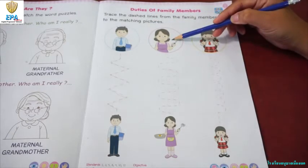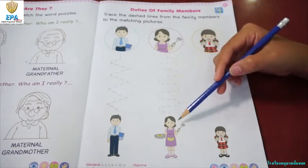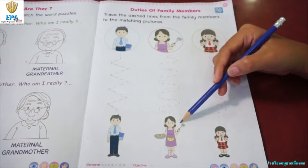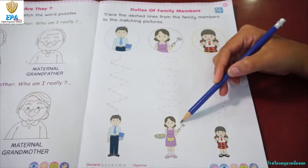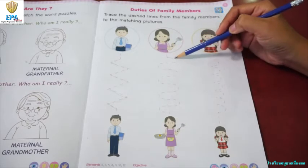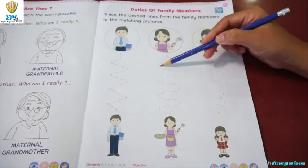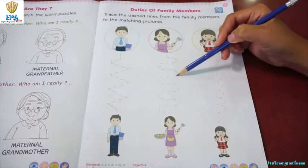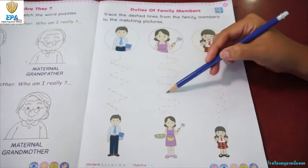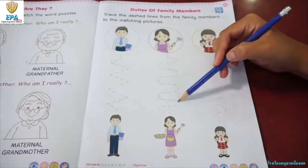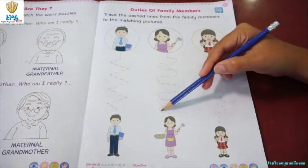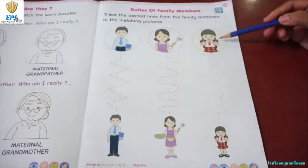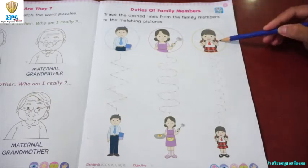Next one is the mother. Let's trace the dust lines. The mother takes care of the family. Now let's follow the dust lines to go to the mother. Again, the mother takes care of the family.